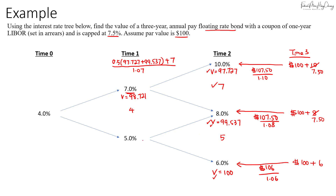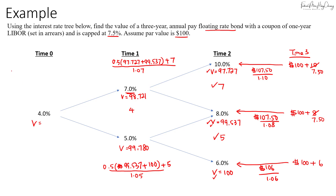We then discount back again to get the value at the next node, which is 0.5 × (98.721 + 100) plus the coupon of $5, discounted at 1.05, giving a value of $99.78. Then we discount these two values back to time 0 using 4%: the value is 0.5 × (98.721 + 99.78) plus the coupon of $4, discounted at 1.04.